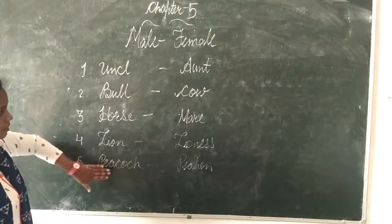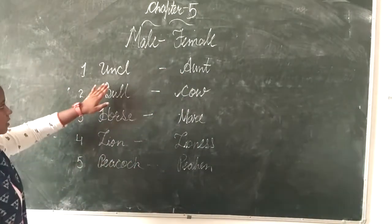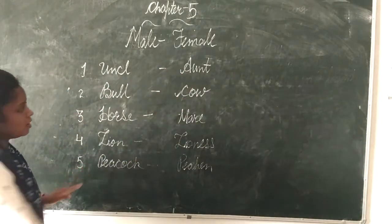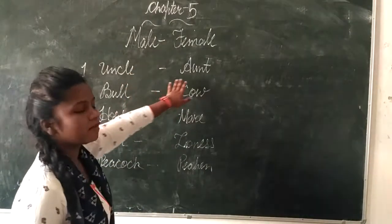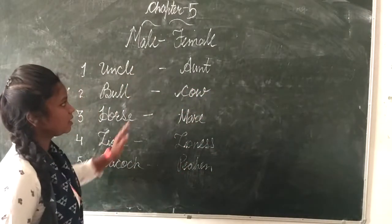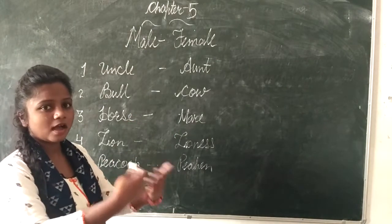As the male, I will give it as a male and I will give it as a female. Like uncle, what will be of uncle? Aunt. The uncle will be aunt. The female will be aunt. As the uncle is the male and what is the female word? Aunt.